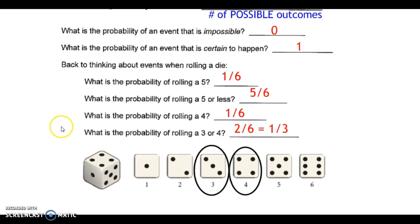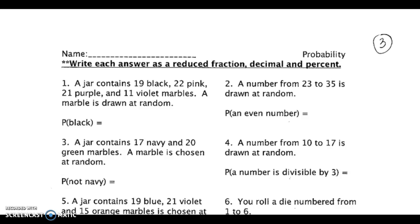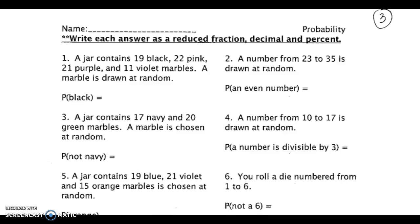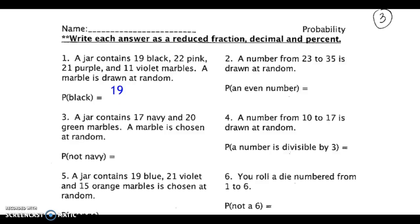Now let's go to the next page. I'm going to do the first one with you, then I'll let you pause the video and show you the answers. The problem says a jar contains 19 black marbles, 22 pink marbles, 21 purple marbles, and 11 violet marbles — a marble is drawn at random. We want the probability of getting a black marble, so the desired outcomes are 19. We divide by the total number of marbles — the possible outcomes — which means adding all the marbles together.